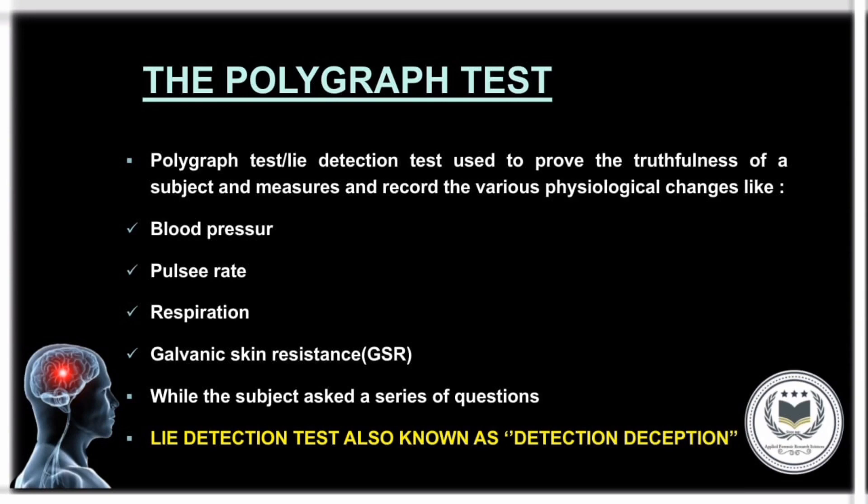Now moving on to our topic — polygraph test, also known as the Lie Detection Test. The polygraph test is used to prove the truthfulness of a subject and measure and record various physiological parameters like blood pressure, pulse, respiration, and galvanic skin resistance while the subject is asked a series of questions. The Lie Detection Test is also known as Detection of Deception.